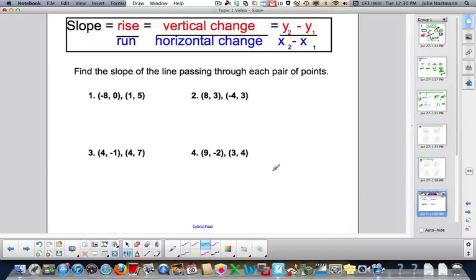And then here. So we look at our slope. Rise over run, vertical change over horizontal change, or y2 minus y1 over x2 minus x1. So this one right here. When you're given a pair of points, you have a couple different options. You could take the points and graph them.